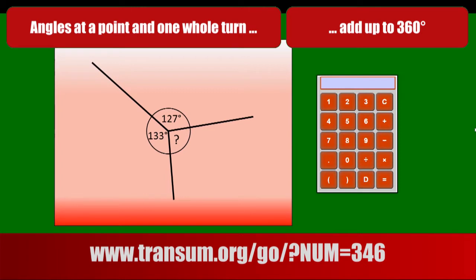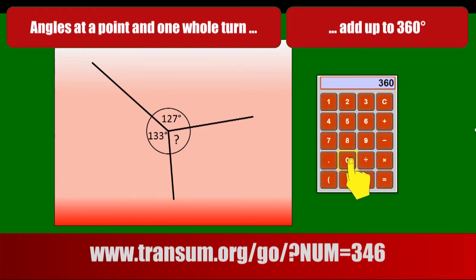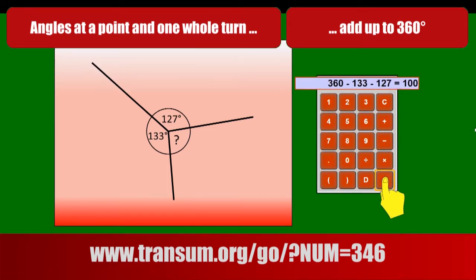Here we have three angles at a point, so we know that they add up to 360 degrees. We want to find the angle marked with a question mark. We could add up 133 and 127 and then take the answer away from 360 to see what's left. The most efficient way on the calculator is starting off with 360 and then taking away the given angles — 133 and 127 — then pressing equals. The answer is 100 degrees.